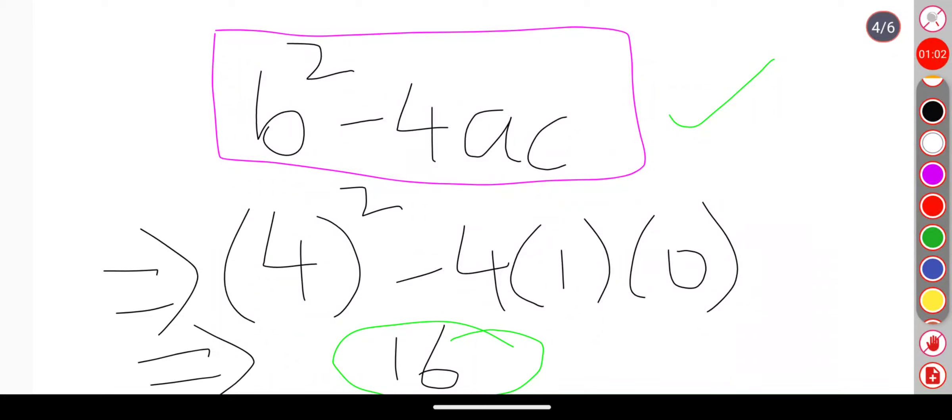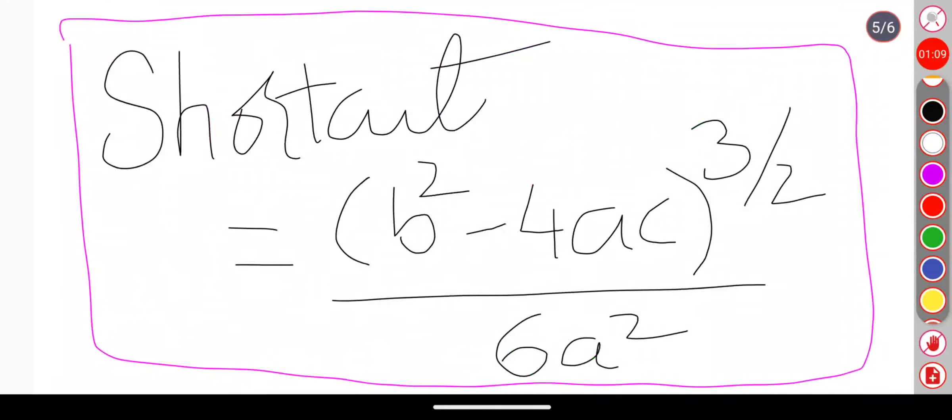Now we have one shortcut present for IIT. The shortcut is: b squared minus 4ac to the power of 3 by 2, divided by 6a squared. Using this shortcut we can solve this problem. We know b squared minus 4ac value, that is 16.